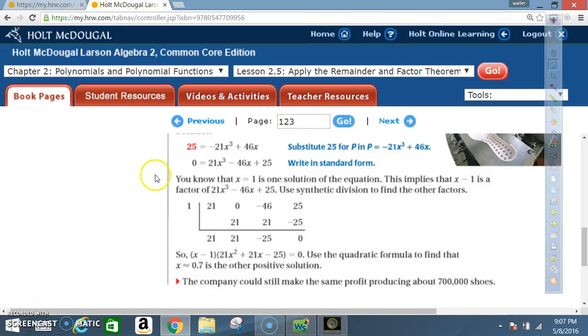Alright, now picking up where we left off on example six. You know that x equals one is one solution of the equation. This implies that x minus one is a factor of 21x³ minus 46x plus 25. So use synthetic division to find the other factors. Put our one on the outside.